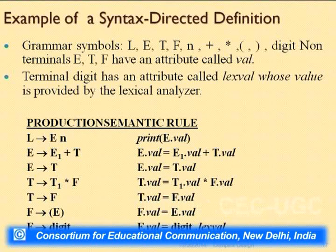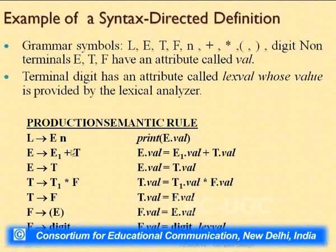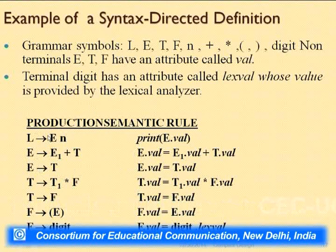Now we come to a worked example that will ease understanding of semantic analysis. It is a simple expression grammar we have seen in syntax analysis — L derives E n, E derives E plus T, E derives T, T derives T star F, T derives F, F derives digit, F derives an expression in parentheses. This part tells how sentences are made, but not how they mean. For instance, E derives E plus T — we understand the value of E and T should be added and passed up to the parent E, but how to transfer this understanding to the system requires writing rules.